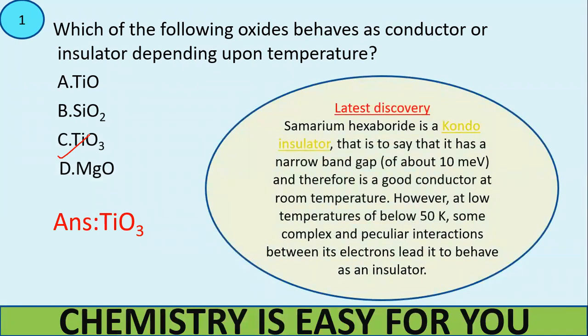Then I want to give the information of one of the latest discoveries. In CSIR NET, they always update the questions. They ask very latest discoveries to know whether you are ready to keep up with the trends that is happening in the subject. So samarium hexaborate, it's called as a Kondo insulator. So what happens is this is having a very narrow band gap. We know that according to the band gap, we can categorize a particular compound as a good conductor or an insulator. So because of this band gap, it is actually a very good conductor at room temperature. But at very low temperature, that is even below 50 Kelvin, this can have some very peculiar interactions between its electrons and behaves as an insulator.